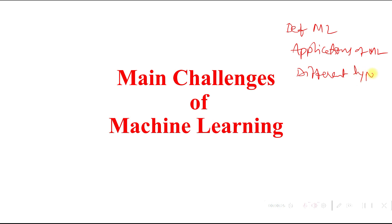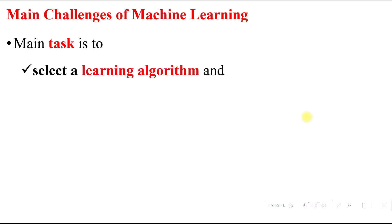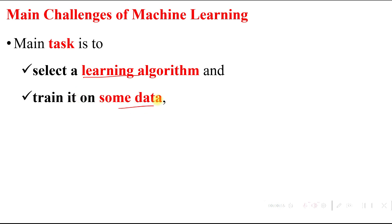Now in this video, we are going to see what are the main challenges of machine learning. The main task of machine learning is selecting a learning algorithm and training this algorithm based on some data. These two are very important in machine learning: selecting the learning algorithm and training it based on some training data.